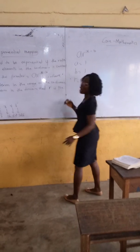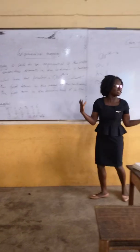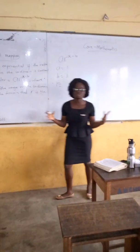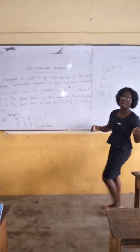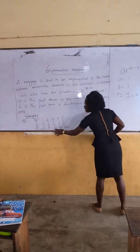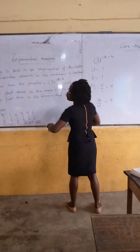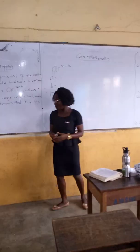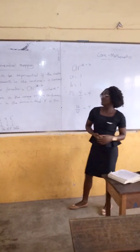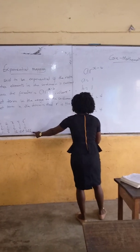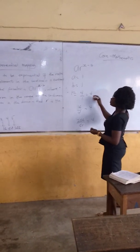Our R is our ratio. We choose any consecutive values in the co-domain and divide. So 4 over 1 gives us 4. We can confirm: 16 over 4 is also 4. And 256 over 64 is also 4. Whichever two consecutive numbers you choose in the co-domain, you get the same ratio. Therefore, our ratio R equals 4.